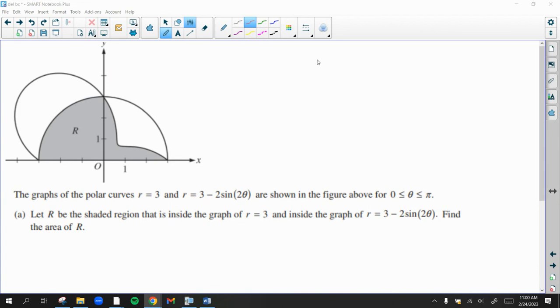So that strange-looking graph you see is defined by r equals 3 minus 2 sine of 2 theta, and this nice circular graph is r equals 3. So if we want to calculate the area of the region R...